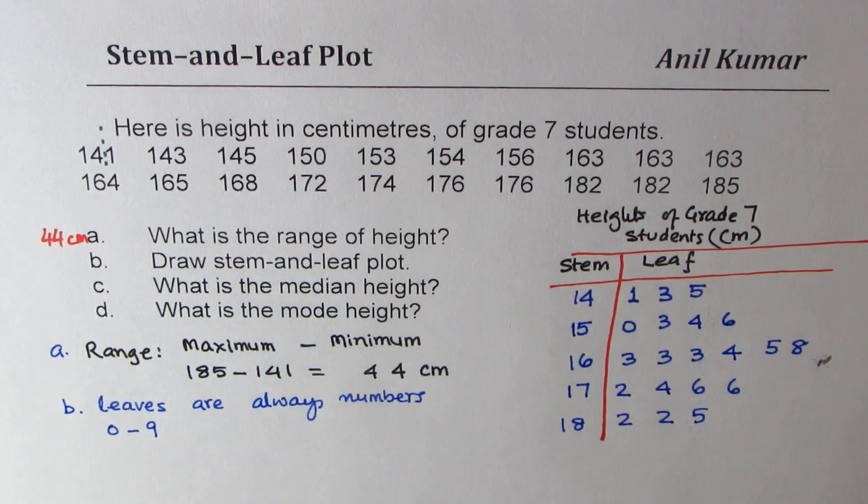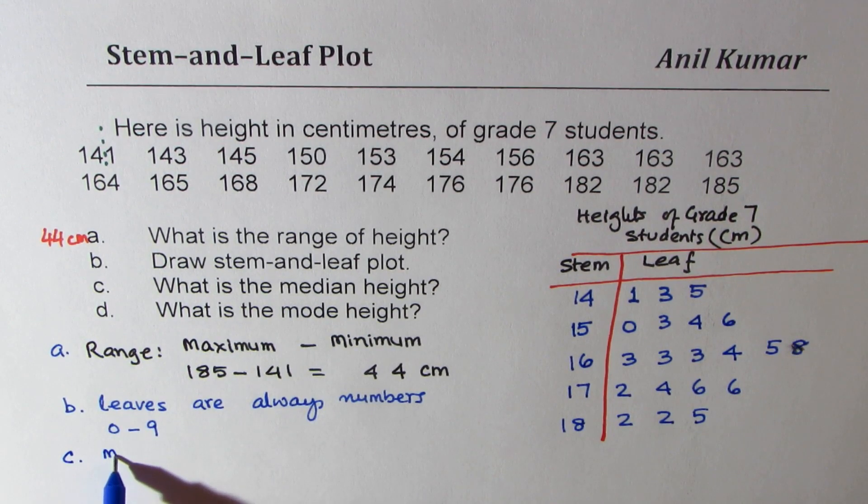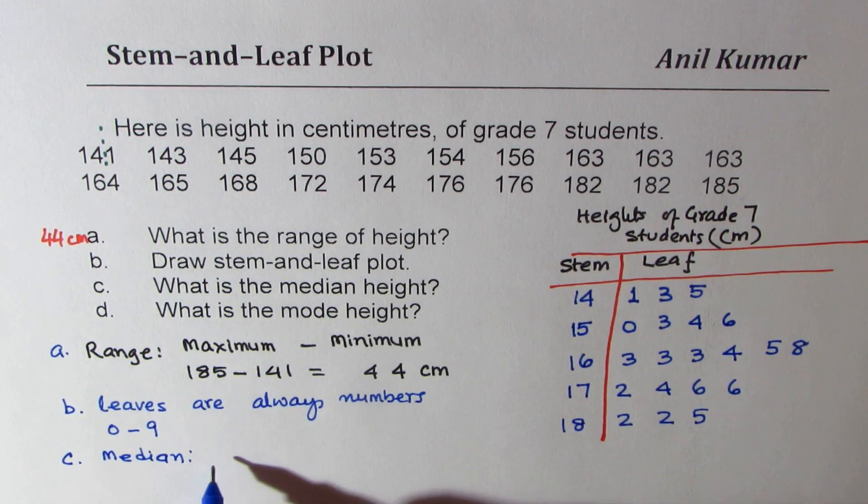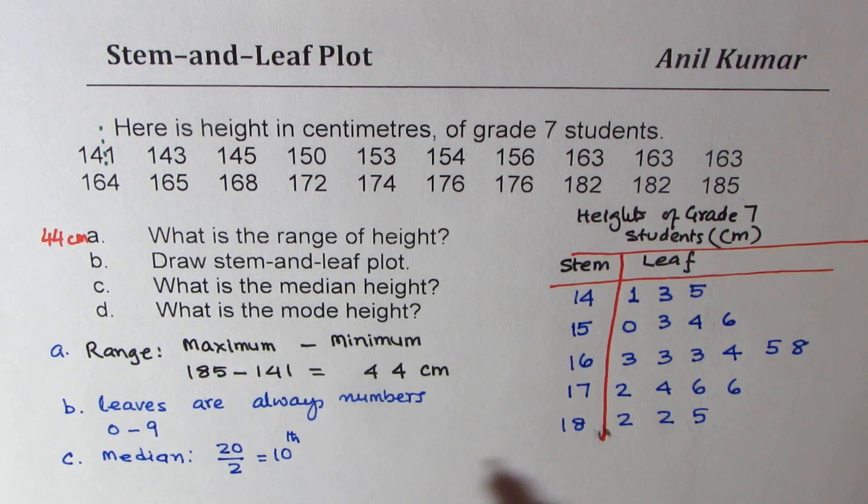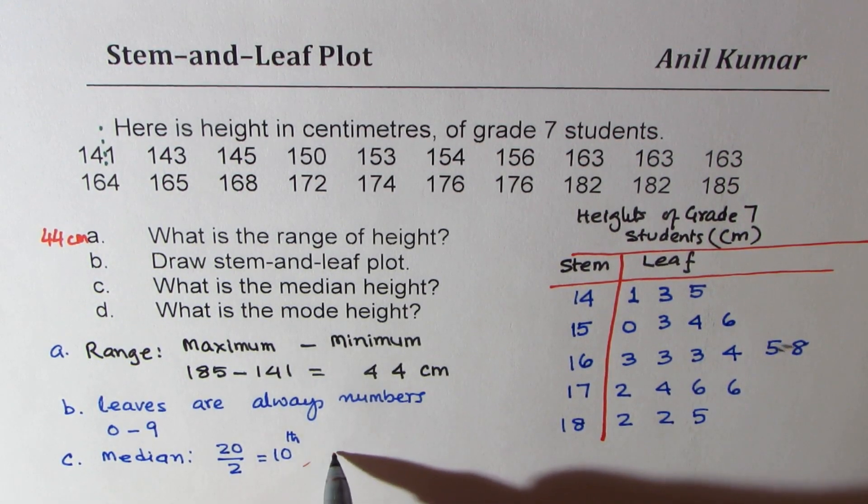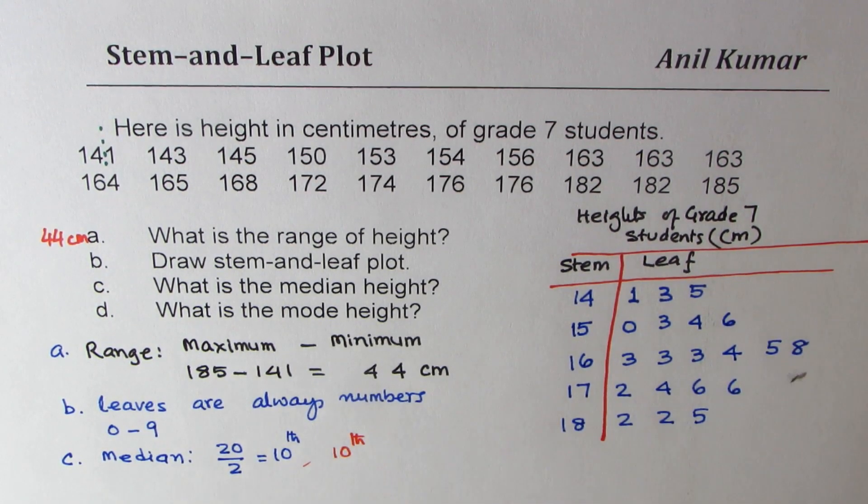Now what is the median height? Part C. To find the median, we have to find the center. Now we have 10. That means right in the middle. So 20 divided by 2 gives us the 10th item. So there are two numbers in the middle, one is the 10th item and one is the 11th. And then the next will be 11th. Median is in between. So let's count.